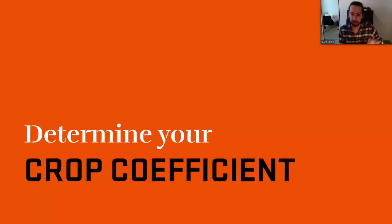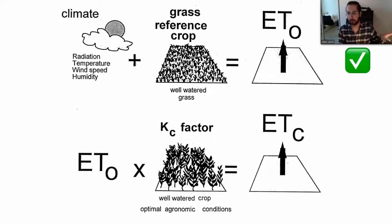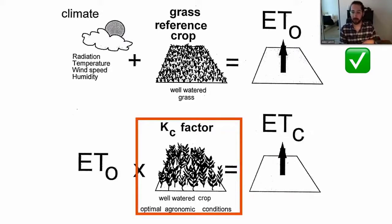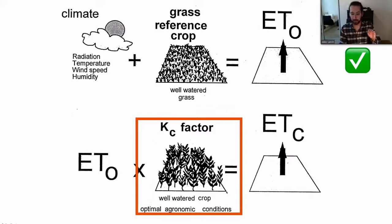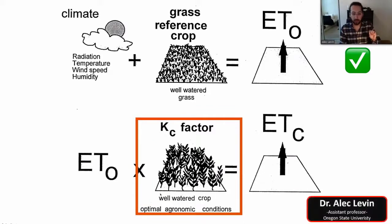We covered ETo, which you can get from a weather station or calculate with a lot of math. Now let's talk about the Kc factor. We have ETo as the reference value and we're multiplying it by something related to our crop. The Kc factor is really only for a well-watered crop under optimal agronomic conditions.